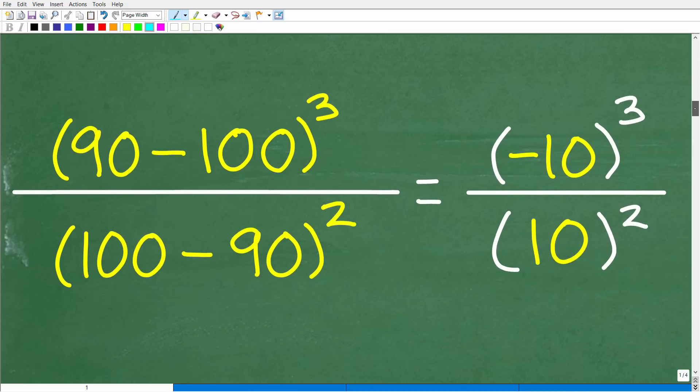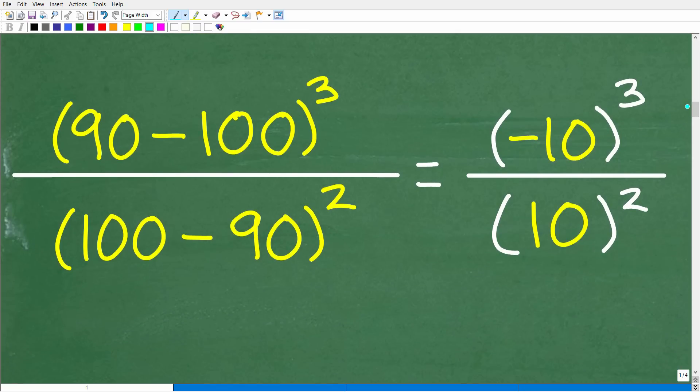But first, let's go ahead and make sure you understand how to simplify what's inside these parentheses now, okay? And, of course, I'll show you why this is a much better way to approach this problem. All right, so here we have parentheses 90 minus 100 parentheses cubed over 100 minus 90 parentheses squared.